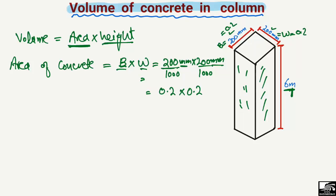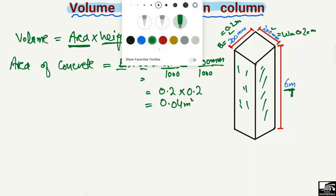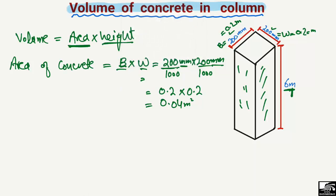So they become 0.2 meters by 0.2 meters. After changing the units of width and breadth, the area of concrete in this square column is equal to 0.04 square meters. This is the first step — finding the area of the concrete in the column.